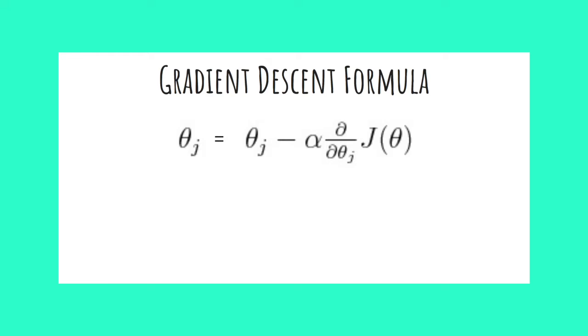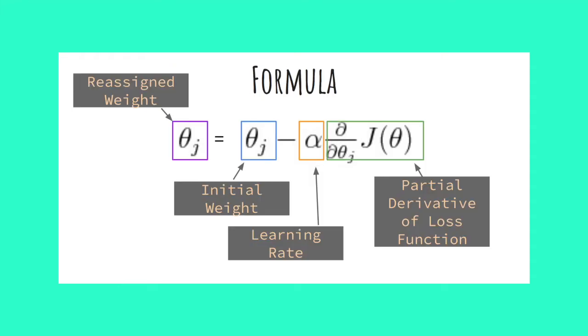This is the gradient descent formula, which updates our weights. Don't get nervous. This is pretty simple. On the left, we have theta j, which represents our new updated weight. Next, we have theta j again. This is our initial weight before it has been reassigned.